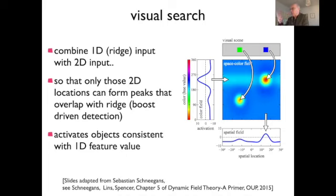The location and color bound combination is represented as a peak, and you can extract the feature dimension you really want — the location — by projecting into a purely spatial field and marginalizing the color. The task of visual search thus answers 'where is the blue?' — directing action to that location, or simply detecting that such an object exists.